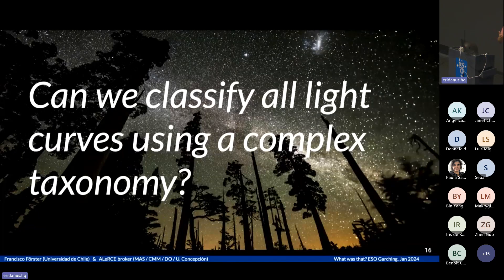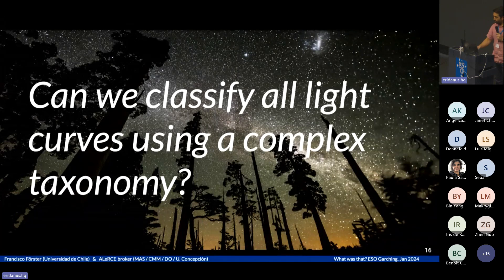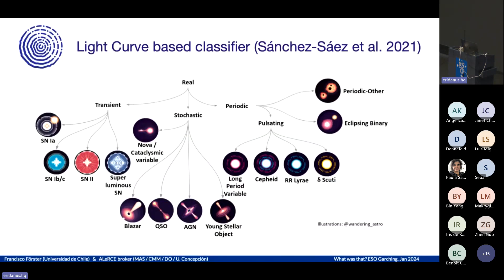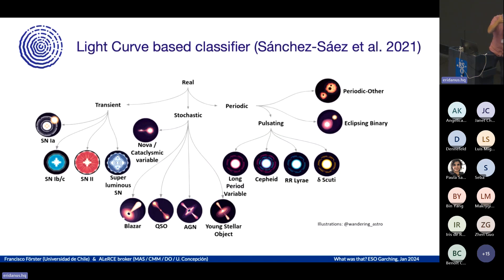The next use case is: what about the rest of the alerts? The stamp classifier is based on the first alert, but you get many alerts and can build a light curve. With a richer light curve, we can use a more complex taxonomy. We classify things first into transient, stochastic, or periodic — classes decided after talking to the community. The idea is that specialists in the community would further classify objects into their favorite subclasses.